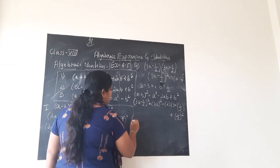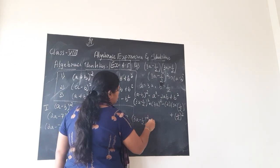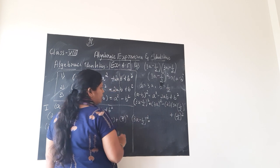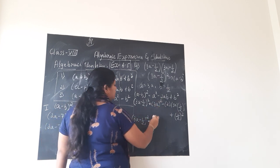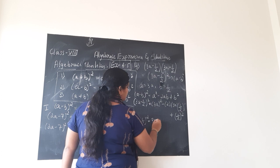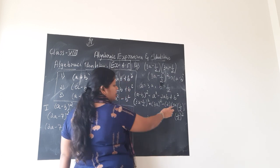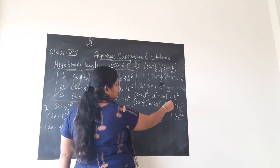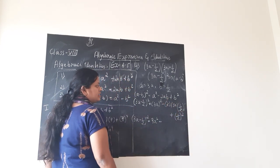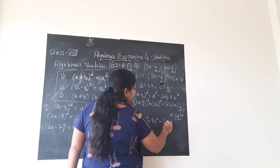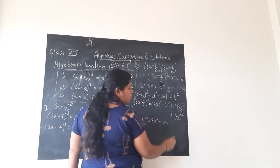Substitution is done. Next, 3a minus 1 by 2 whole square equals 3 squared times a squared, which is 9a squared. Minus: 2 into 3a into 1 by 2 — here the 2 in the numerator and the 2 in the denominator cancel — so you are left with only 3a.